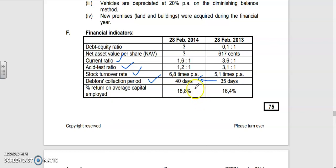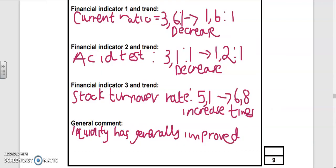In terms of liquidity position, yes, the liquidity position has improved. I know the ratios decreased, but we're seeing a more realistic picture. Also, stock turnover rate increased, meaning stock is getting sold faster. Those are the three things you can use to comment.